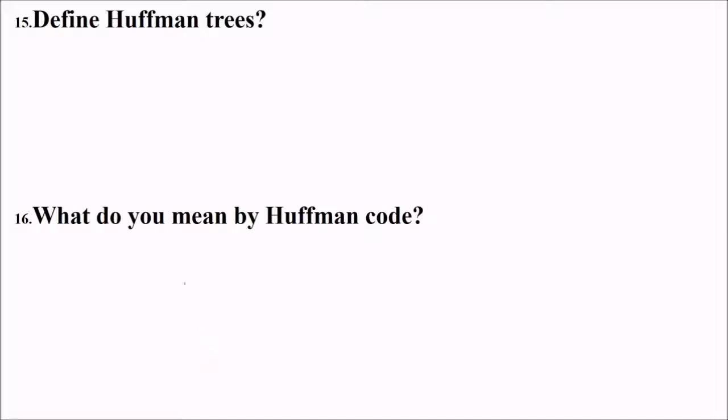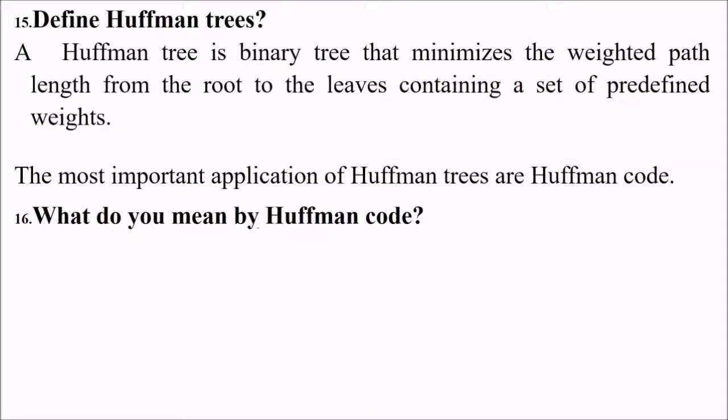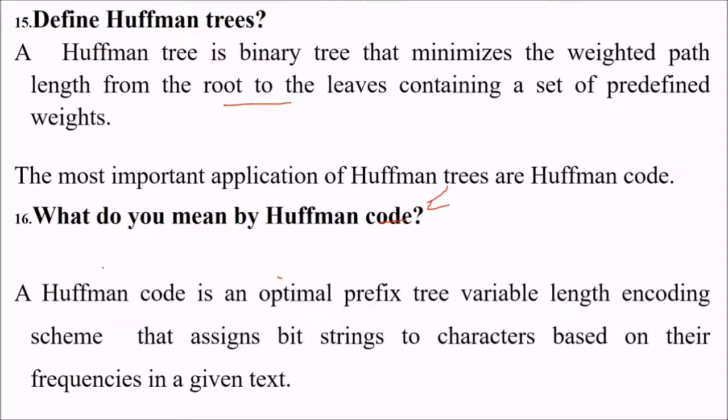What are Huffman trees? This is a binary tree that minimizes the weighted path length from the root to the leaves containing a set of predefined weights. The most important application of Huffman tree is Huffman code normally used in compression algorithms. What is Huffman code? This is an optimal prefix-free variable encoding scheme where we assign bit strings to characters based on their frequency in a given text.